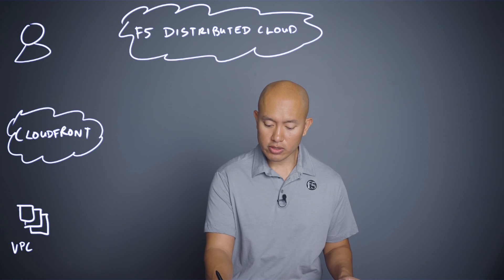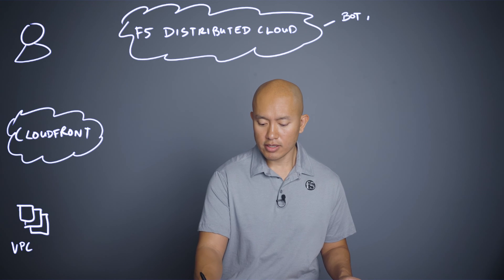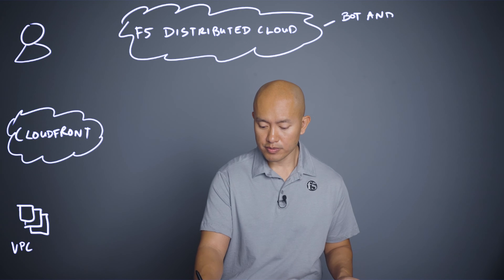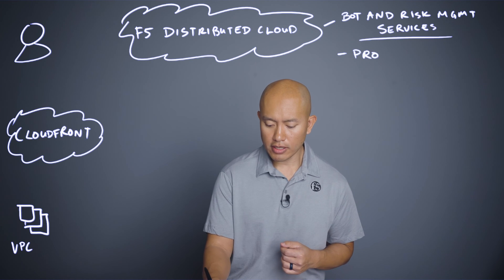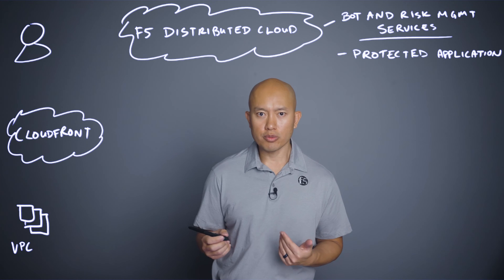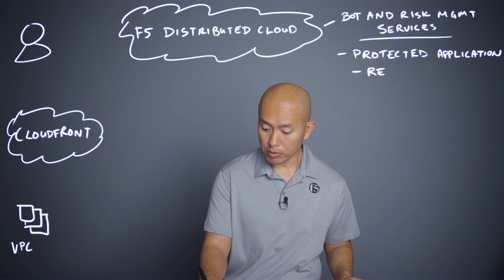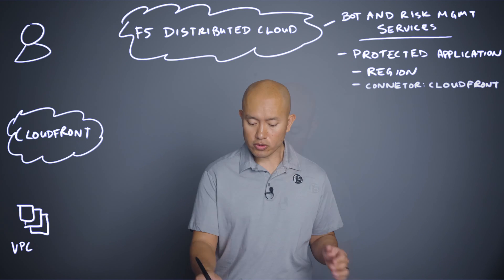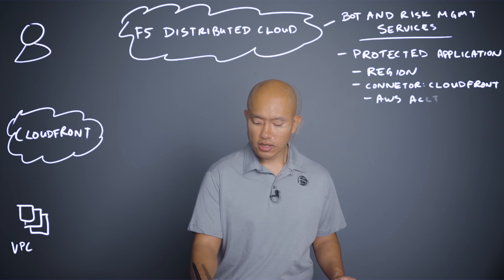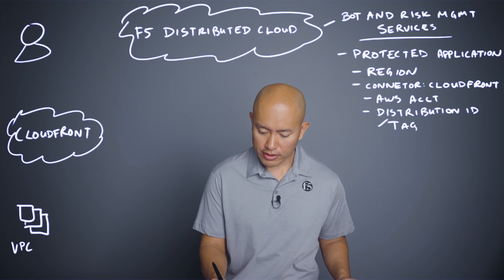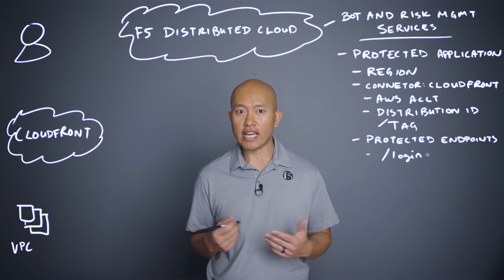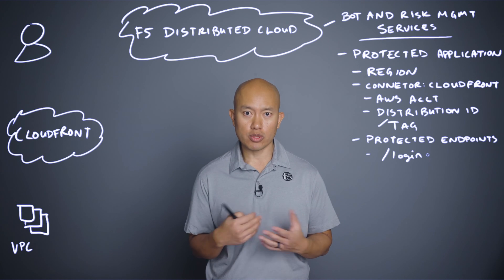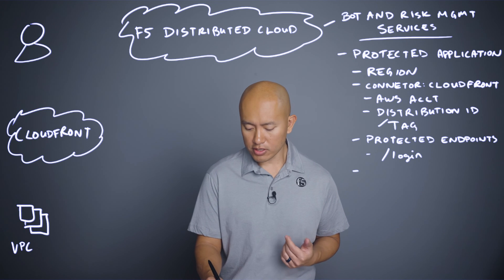Inside F5 Distributed Cloud is where the bot and risk management services are hosted and configured. In the distributed cloud console you'll be configuring what's called a protected application, specifying a region and a connector type of Amazon CloudFront. You'll also need to give it the AWS account number and the distribution ID, or you can use a tag instead. Then you'll specify the protected endpoints — this might be a login page or registration page, the pages at risk to unwanted automated traffic or bots — and specify the methods you're using, such as POST.